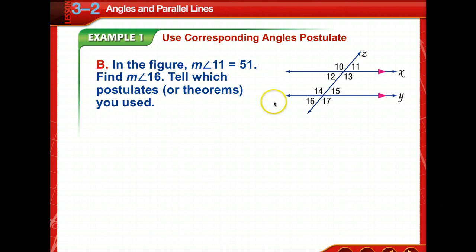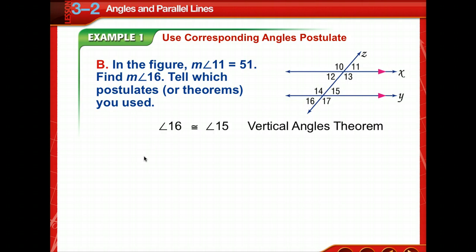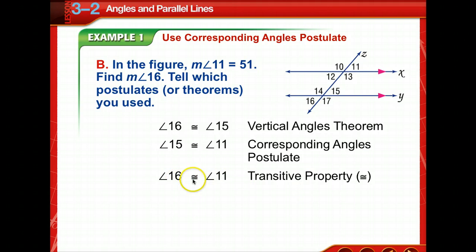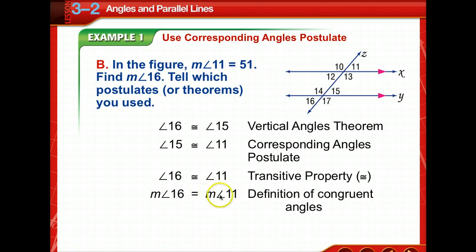Let's look at another one. We're told the measure of angle 11 is 51. Find the measure of angle 16. Angles 16 and 15 are vertical angles, so they are congruent due to the Vertical Angles Theorem. Angles 15 and 11 are congruent due to the Corresponding Angles Postulate. Therefore, angle 16 is congruent to angle 11 by the Transitive Property of Congruence. By the definition of congruent angles and substitution, the measure of angle 16 is 51.